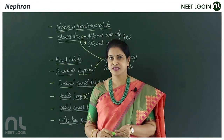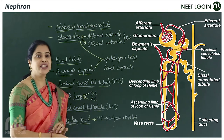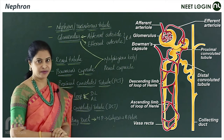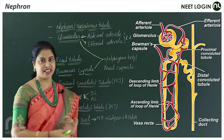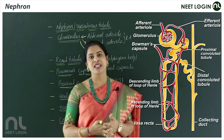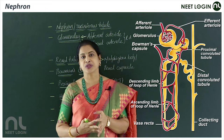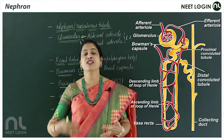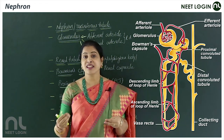The nephron is the functional unit of the kidney, where filtration of blood occurs to form the excretory waste — urine. Each kidney contains around 1 million nephrons. However, after 40 years of age, every 10 years approximately 10% of nephrons are destroyed, which is why urinary-related problems are more common in elderly age.